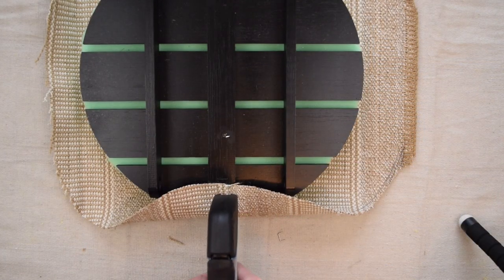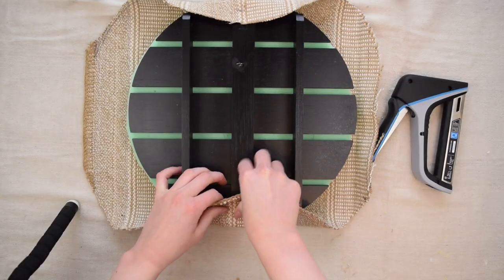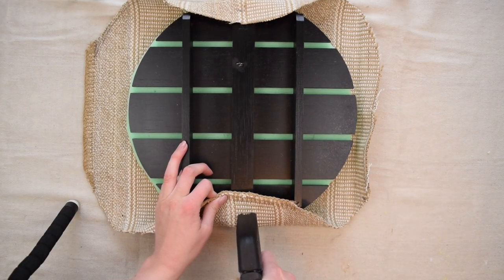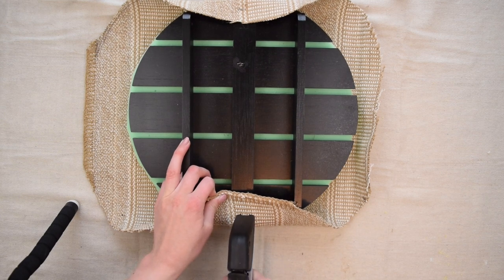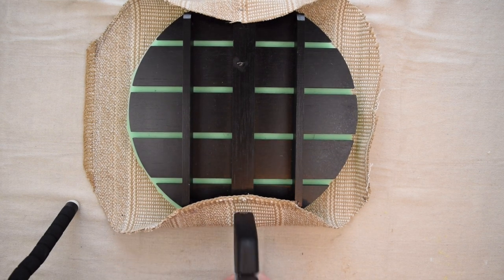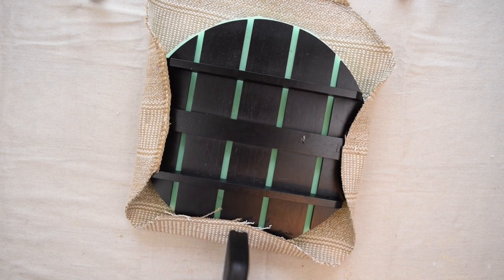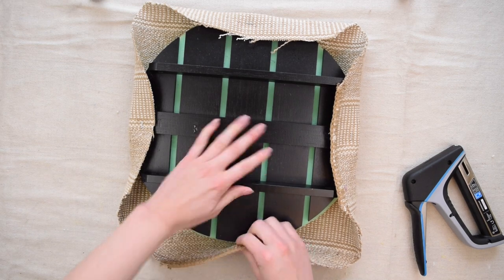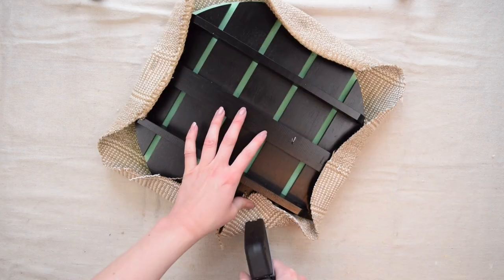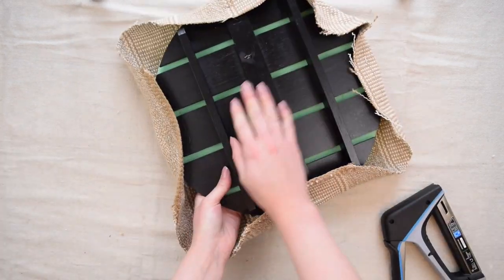Next, using my staple gun, I began stapling first the bottom here, then I rotated the tabletop and put a staple on the opposite side, making sure to pull the rug nice and taut. And then I repeated that by rotating it again by 90 degrees, putting in a staple, rotating at 180 degrees, putting in a staple, and I did that all the way around the entire plant stand.